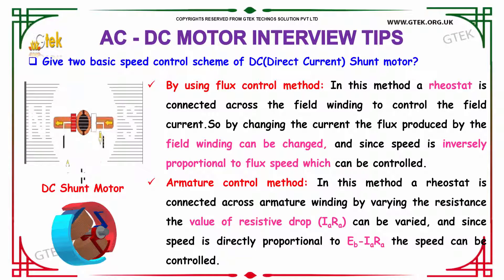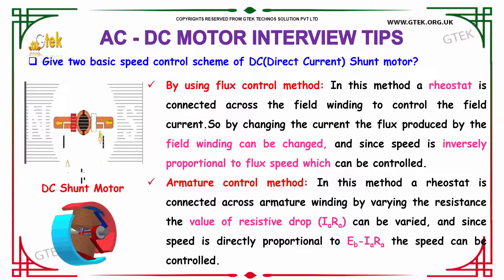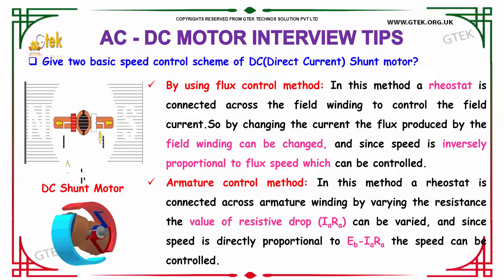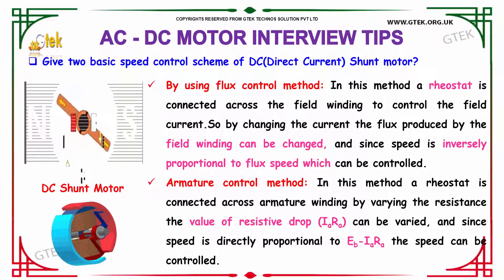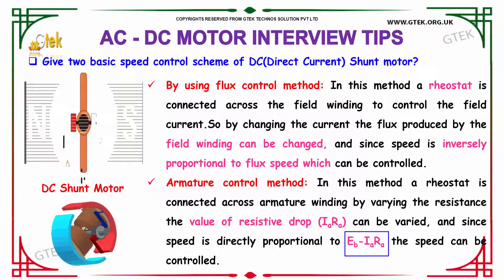For the second basic speed control scheme of DC — the armature control method — a rheostat is connected across the armature winding. By varying the resistance, the value of resistive drop, which is Ia into Ra, can be varied. Since the speed is directly proportional to Eb minus Ia into Ra, the speed can be controlled.